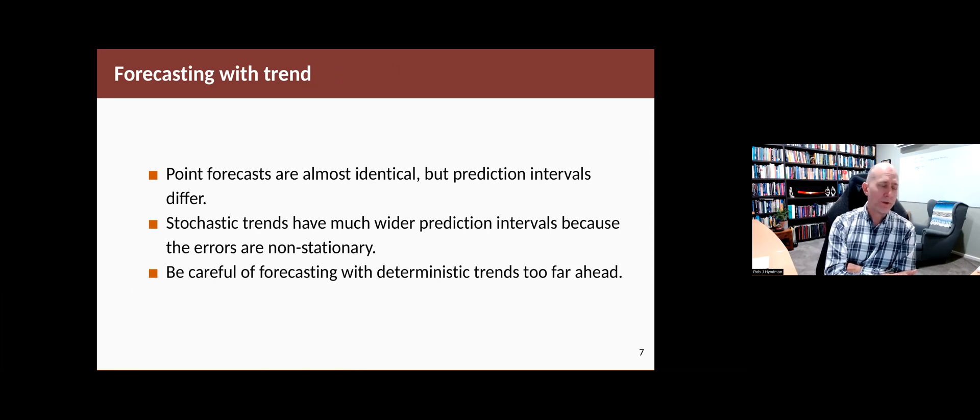From the two models, the point forecasts are almost identical. The prediction intervals differ. The wider prediction intervals arise because the errors are non-stationary. And in general, we don't want to be using forecasting with deterministic trends very far ahead into the future, because it's making a very strong assumption that's unlikely to hold for a long period ahead. A stochastic trend is generally a safer option here if we need a trend at all, because it's allowing the trend to change direction over time.